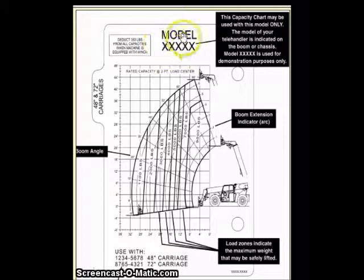Here's the model number of the forklift, and then over here would be whatever attachment you're using. So if you've got a 72 inch carriage or a 48 inch carriage, make sure you use the right chart. I'm going to go over how to use this and how to make it a lot simpler.